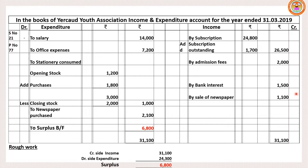Adding all credit side items gives income side total of 31,100. Adding all debit side items: 14,000 plus 7,200 plus 1,000 plus 2,100 gives expenditure side total of 24,300. Credit side is higher, so write the highest amount on both sides: 31,100. The difference between credit side and debit side is 6,800. Income is more than expenditure, so this is a surplus. Surplus balancing figure is 6,800.